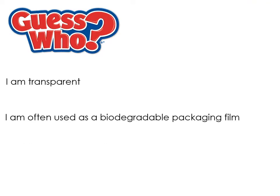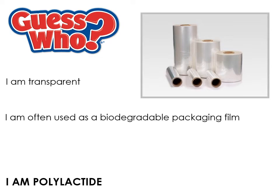Polylactide is transparent and often used as a biodegradable packaging film. Interestingly, it's also the material used for 3D printing filament in a slightly different form. Polylactide comes from sugars such as cornstarch, making it a non-finite material that can biodegrade — another excellent sustainable material option. In an exam question about sustainable packaging, polylactide and cellulose acetate are two really strong examples.